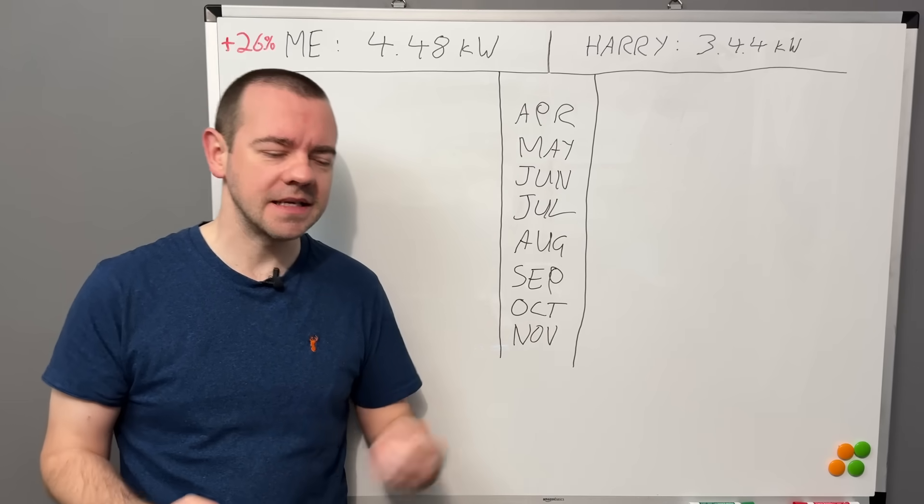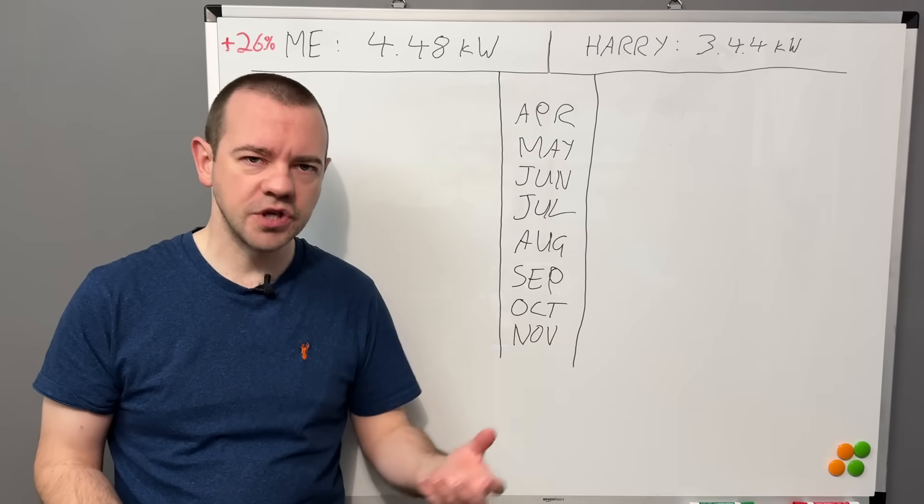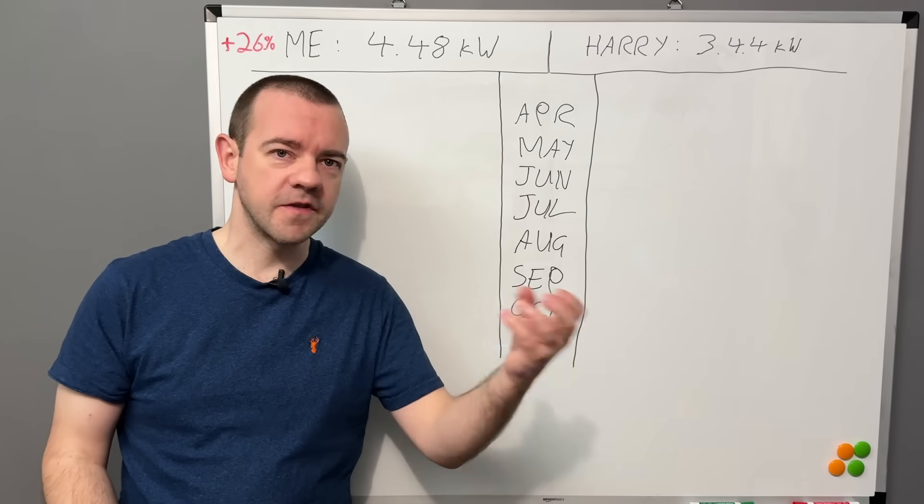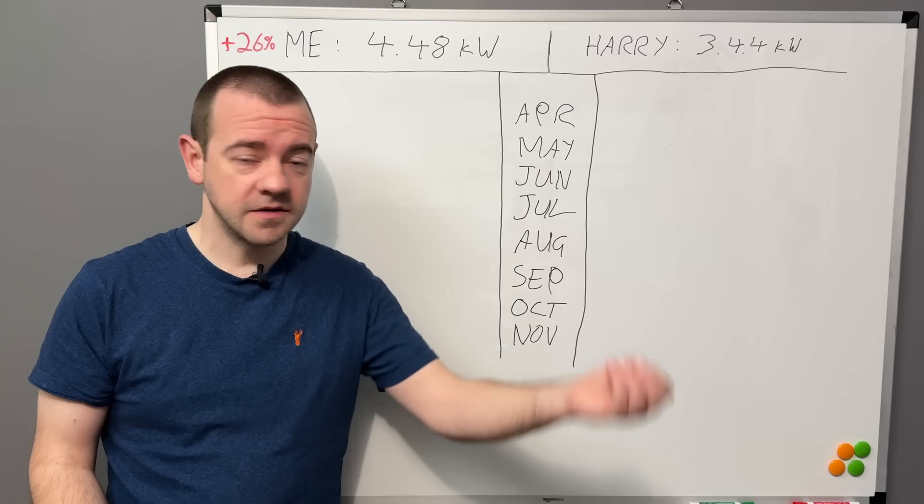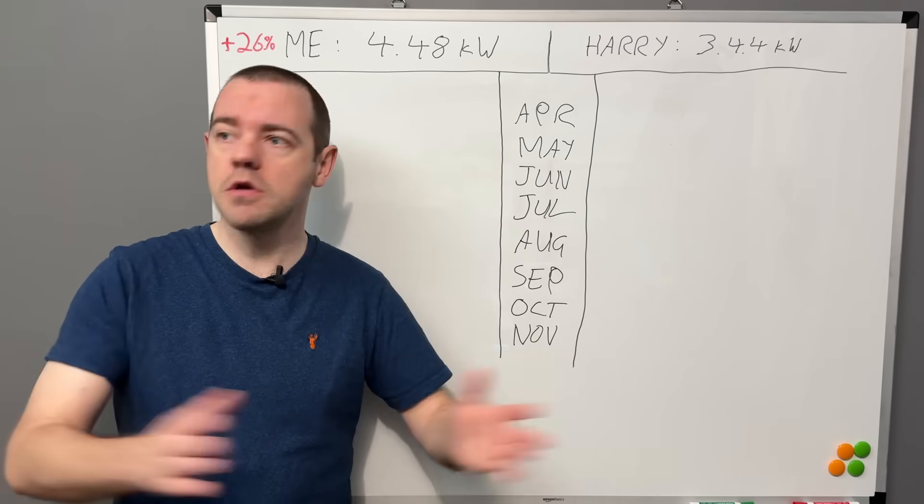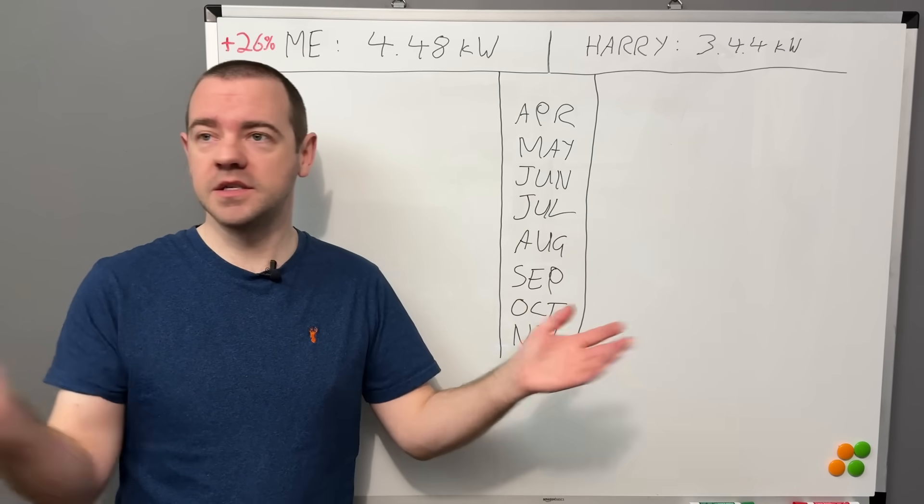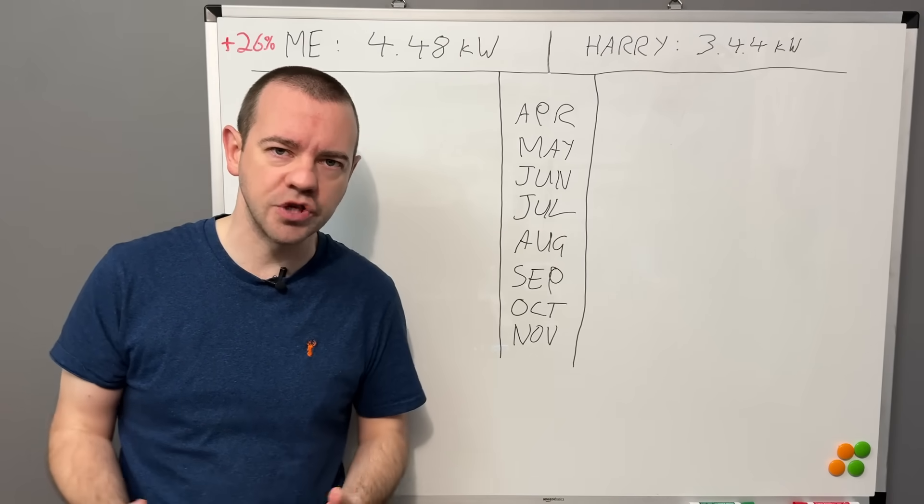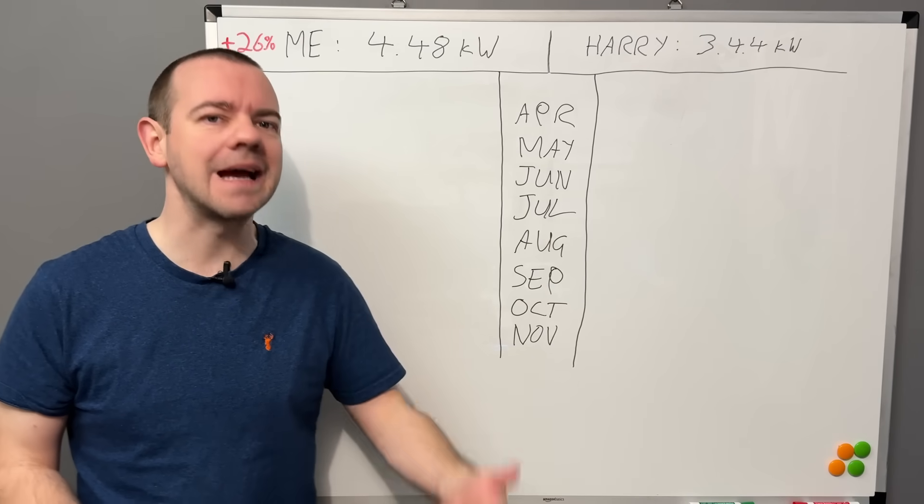What I mean by that is I went for a budget array, a budget install, which essentially means whoever goes with that typical fixed price solar array, you're going to be getting the same panels, the same inverter no matter where you are in the country, whichever way your house is facing. Everyone gets the same thing, hence the budget nature of it. There's no real design put into the system that I got.